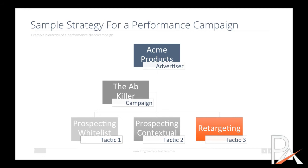At the bottom we have three different tactics. Tactic one is a prospecting whitelist. Tactic two is using contextual channels. And the last one is retargeting, which is a pillar of all performance campaigns in programmatic.